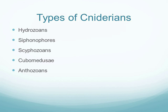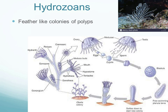The five types of cnidarians found in the ocean are hydrozoans, siphonophores, scyphozoans, cubozoans, and anthozoans. Hydrozoans are feather-like colonies of polyps that live most of their life in the polyp phase, only switching to the medusa phase for reproduction.